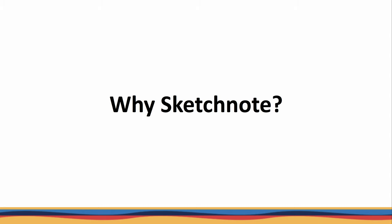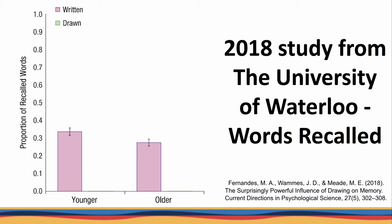So why sketchnote? In an academic setting, there's emergent research indicating that summary note-taking combined with relevant drawings is one of the most effective ways to remember new information and create links to other related concepts and ideas. Researchers at the University of Waterloo conducted a series of tests on 24 undergraduate students and 24 adults over the age of 65, all of whom had normal cognition. The younger people remembered more words than the older people when writing them down, which you can see on the graph here — which isn't surprising.